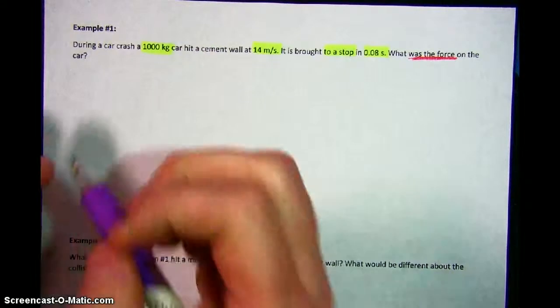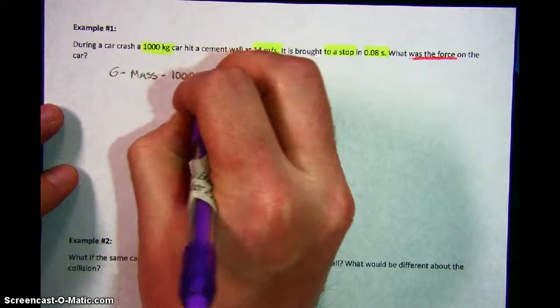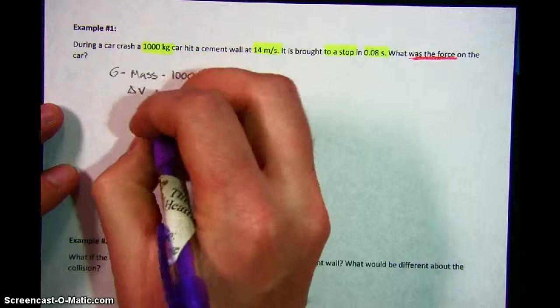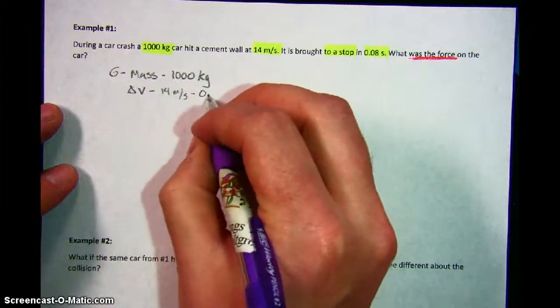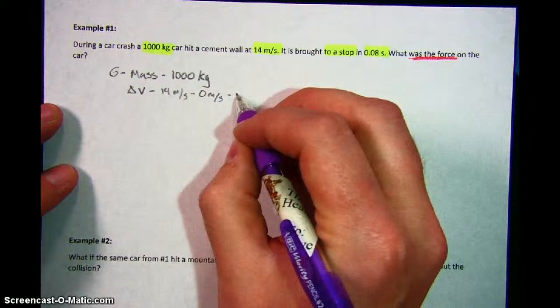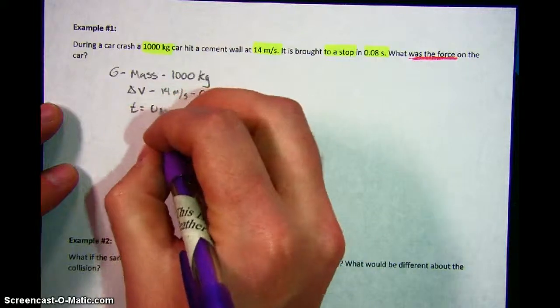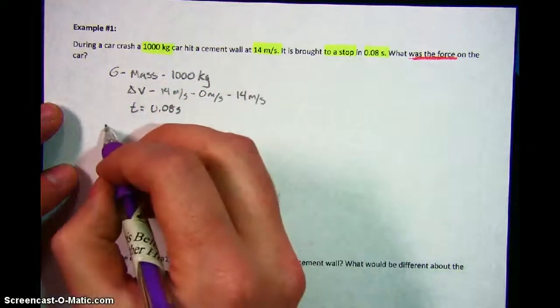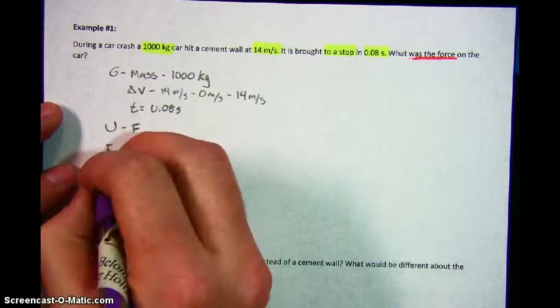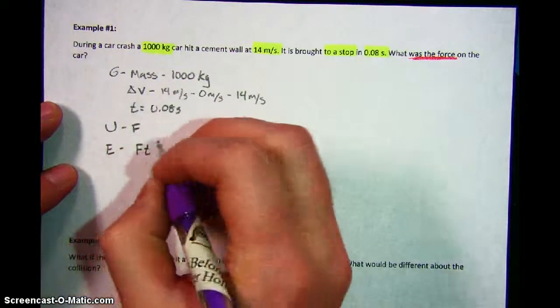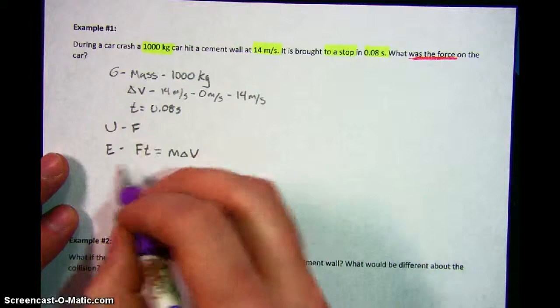So the first thing that we're going to do is we need to keep track of the stuff that's important to us. We're going to start with the mass, 1,000 kilograms. It said it hit the cement wall at 14 meters per second, that's also important information. It came to a stop, we need to know that. And it also happened in 0.08 seconds. And then finally it's asking us to figure out what was the force. Let's get started. First thing I'm going to do is I'm going to write down all of our givens. We know that the mass of the car was 1,000 kilograms. We know that the change in velocity, it started out with 14 meters per second and it ended with 0 meters per second. So 14 minus 0, our change in velocity is 14 meters per second. We also know our time took 0.08 seconds.